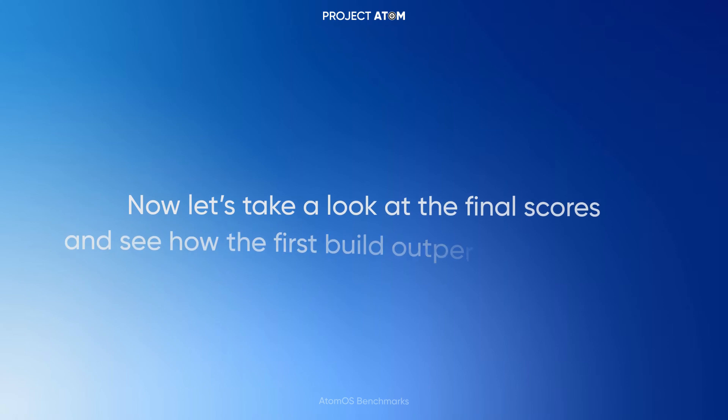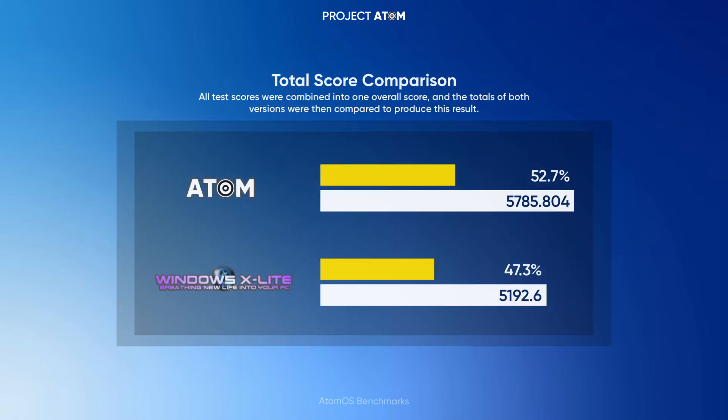Now let's take a look at the final scores and see how the first build outperforms the other. As you can see, this final score is the total of all the benchmarks we ran. Atom OS scored 5785.804, showing strong performance across CPU, GPU, RAM, and system responsiveness. X-Lite scored 5192.6, which is about 11.9% lower than Atom OS. This shows that Atom OS outperforms X-Lite in almost every area, giving a smoother and more optimized experience overall. Even though the difference might seem small at first, when you combine all the tests, Atom OS clearly has the advantage.